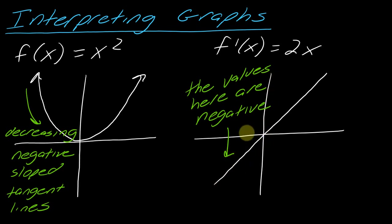On this side, all of these values, these have negative y values. So all of these values here are negative, just like all of the slopes here would be negative. So when you look at the graph of a derivative, you want to make sure that you're thinking of negative values. You want to interpret that as negatively sloped tangent lines.